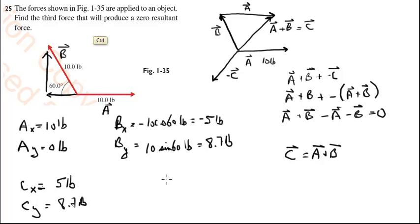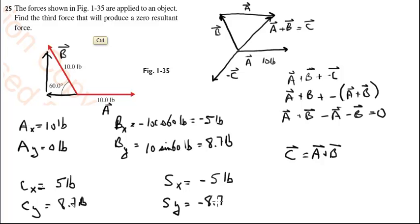The solution vector S is going to have an X component of negative 5 pounds and a Y component of negative 8.7 pounds. So S sub X is 5 pounds pointing in the negative direction, and S sub Y is negative 8.7 pounds, also pointing in the negative direction.